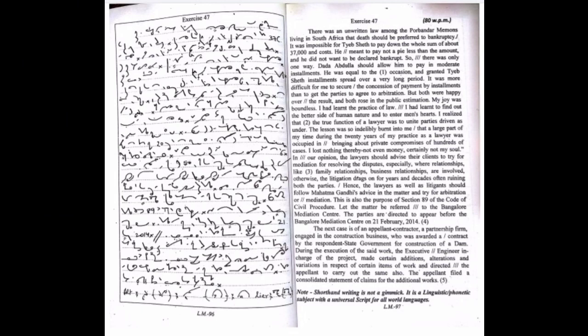There was an unwritten law among the poor Bandar Memans living in South Africa that debt should be preferred to bankruptcy. It was impossible for Tayyip Sheth to pay down the whole sum of about 37,000 rupees and costs. He meant to pay not a pie less than the amount, and he did not want to be declared bankrupt. So there was only one way: Dada Abdullah should allow him to pay in moderate installments.